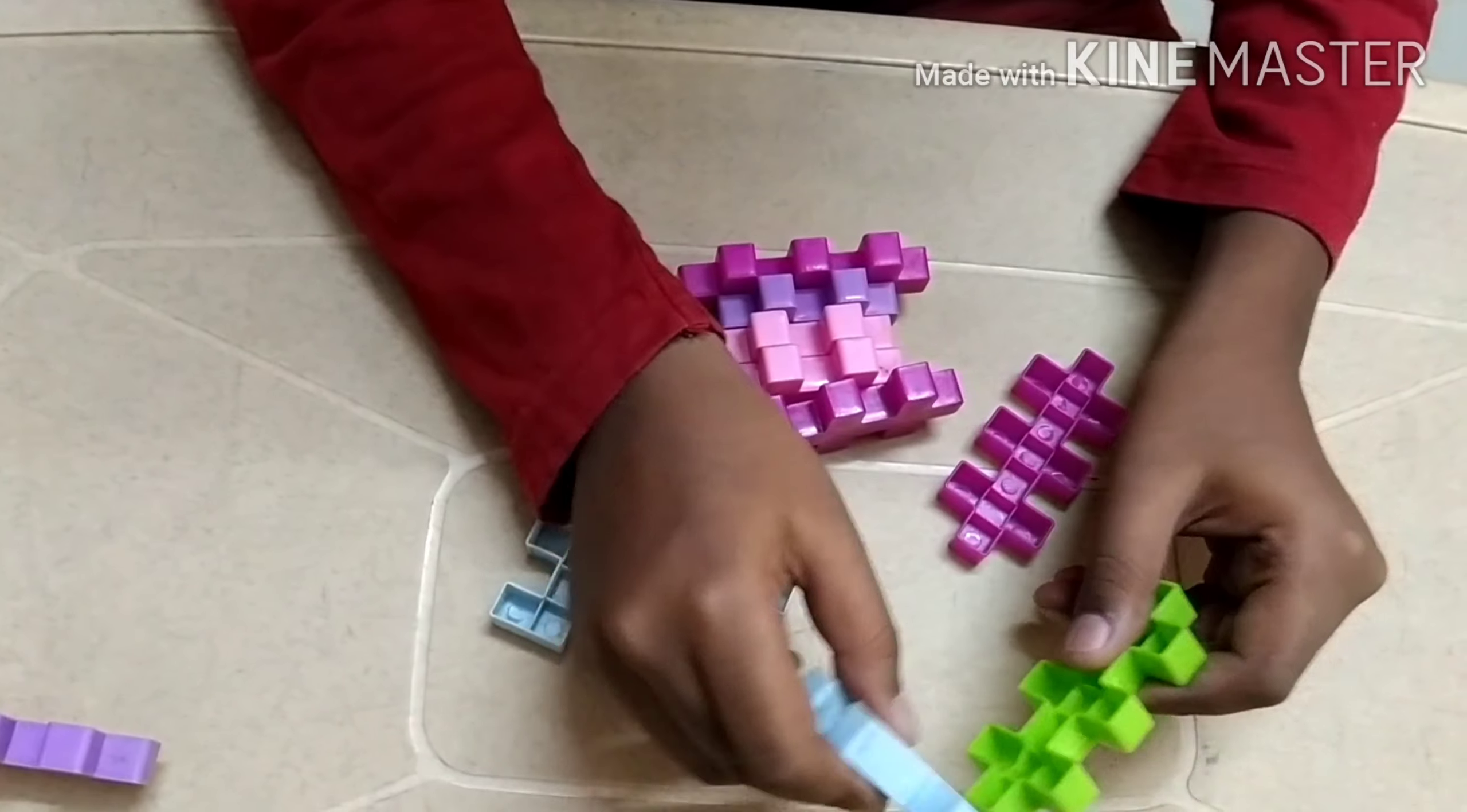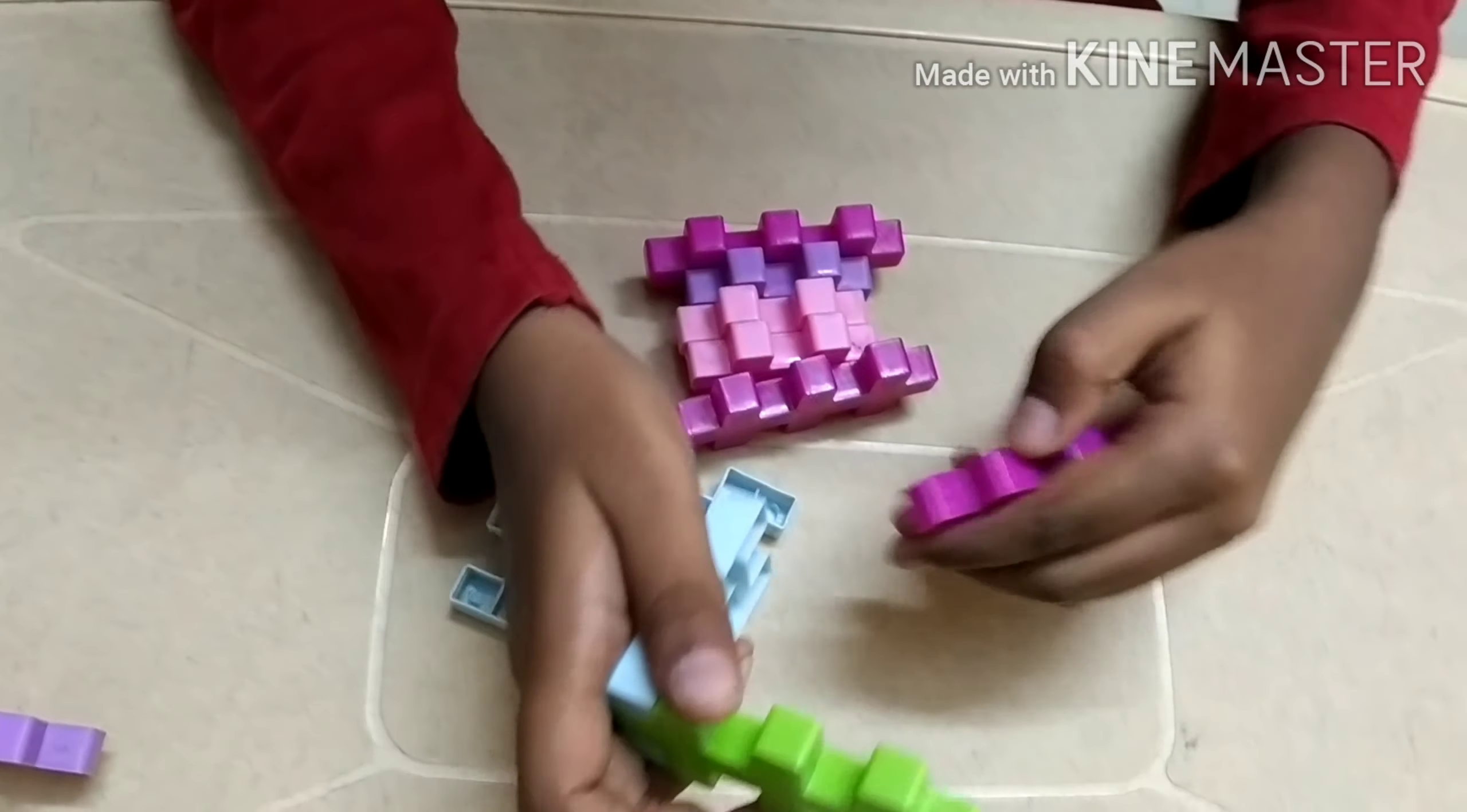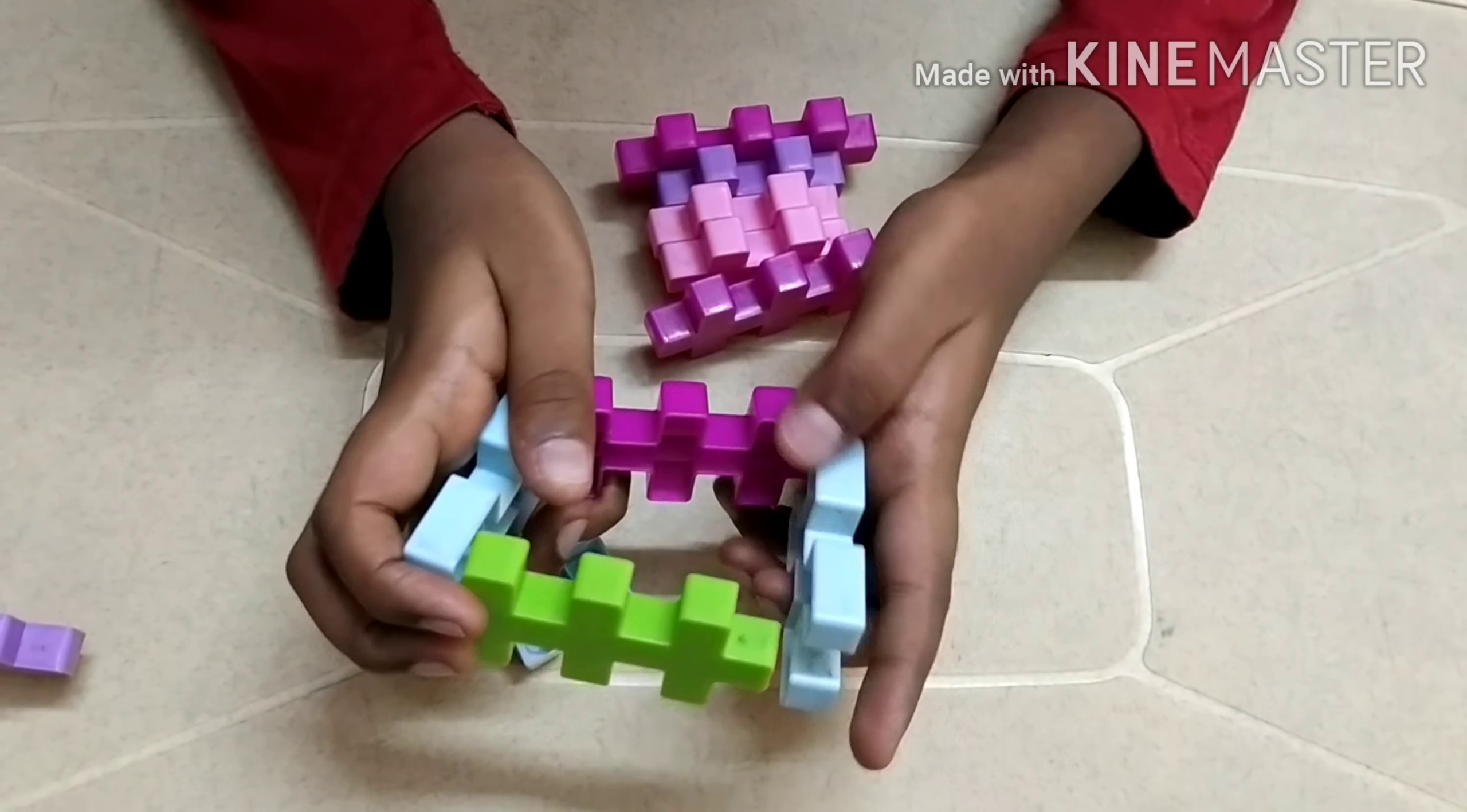Now let's start by making the body. For making the body, you have to attach these two pieces to both sides, then attach it here in the middle like this.